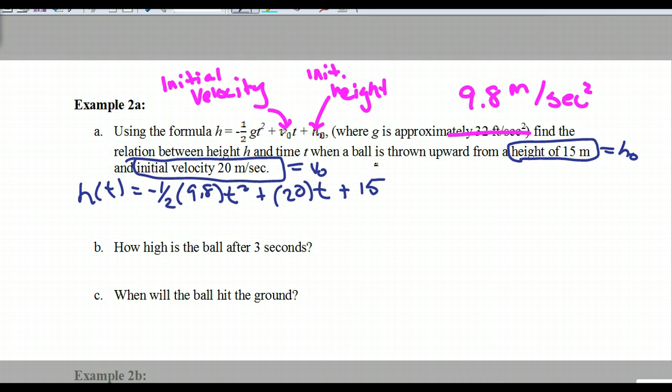Do you guys see how I just replaced those three numbers into the equation? So if I were to simplify that out, this would actually end up being negative 4.9 t squared plus 20 t plus 15.